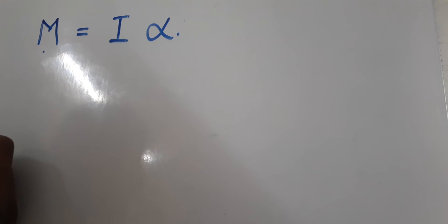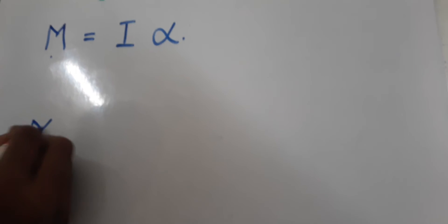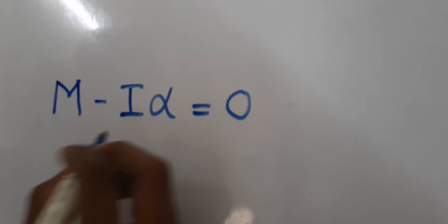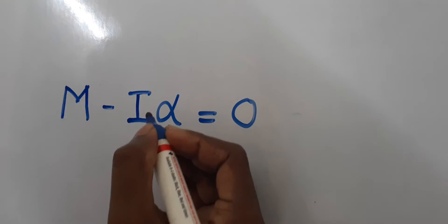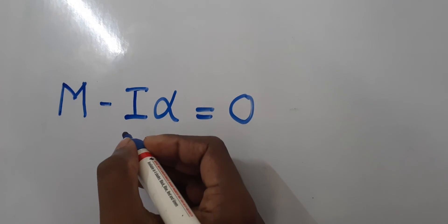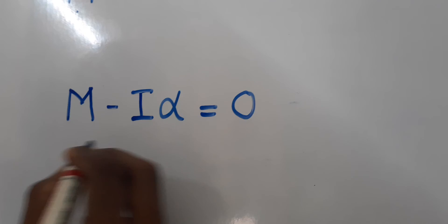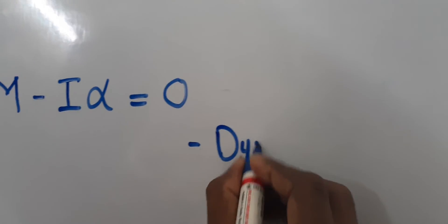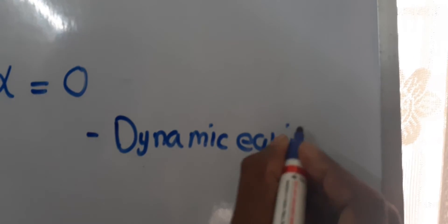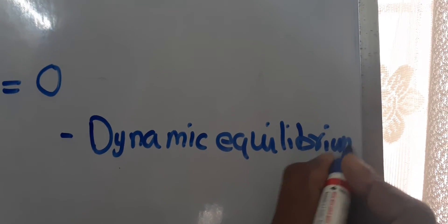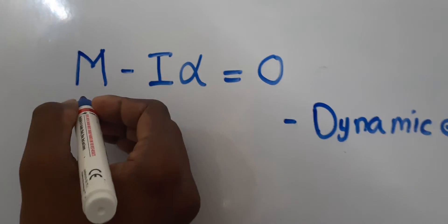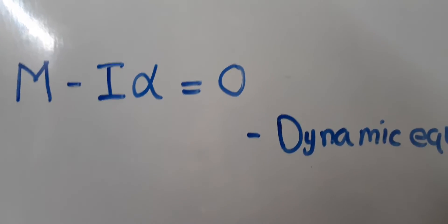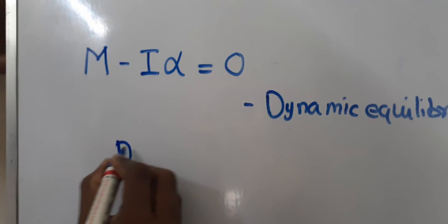Now we will see the equation of motion under the action of a constant moment. We can write the equation as M minus I*alpha equals zero, where I*alpha is the inertia couple, also called the inertia torque in rotational motion. This equation represents dynamic equilibrium: if we apply the inertia couple to the rotating body in addition to the moment of the active forces, we obtain a condition of equilibrium. This principle is called D'Alembert's principle in rotation.